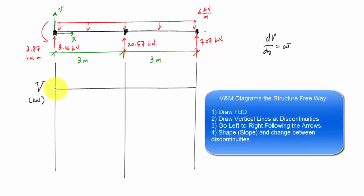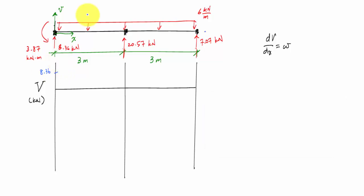So here I start, I go up 8.36 kilonewtons. I have a constant distributed load between these two discontinuities, so I know my shear diagram here will be linear. It's pushing down, so I'm decreasing. This area right here is 6 times 3, which is 18 kilonewtons. I'm at 18 kilonewtons. I'm going to decrease 18 kilonewtons to negative 9.64. This is negative 9.64 kilonewtons. Then I jump up 20.57, which will take me to 10.93 kilonewtons.